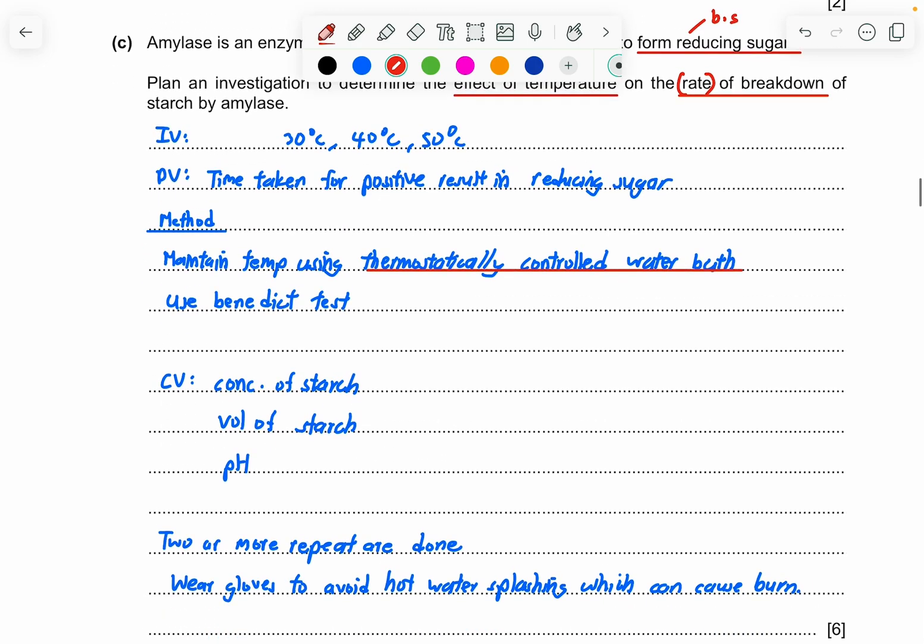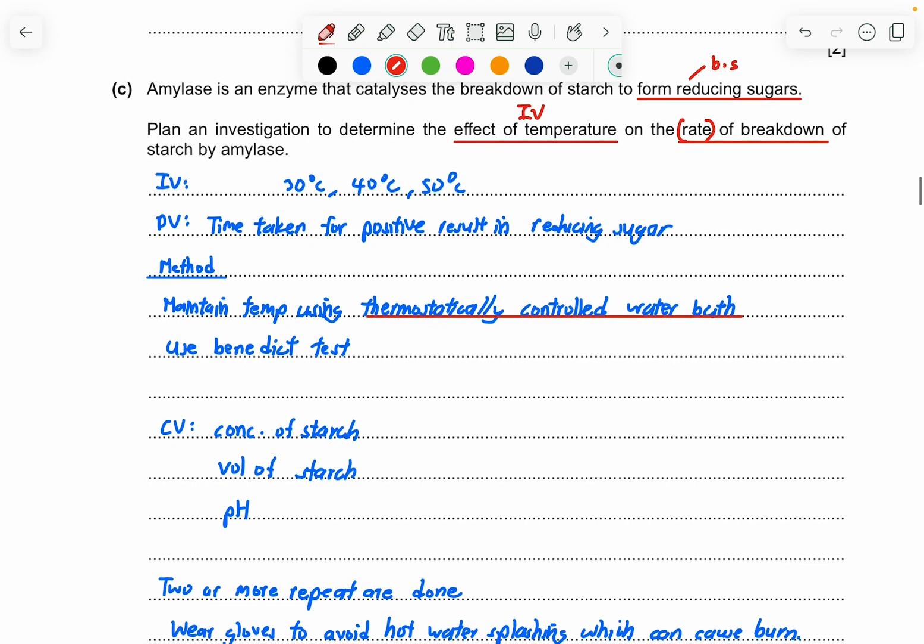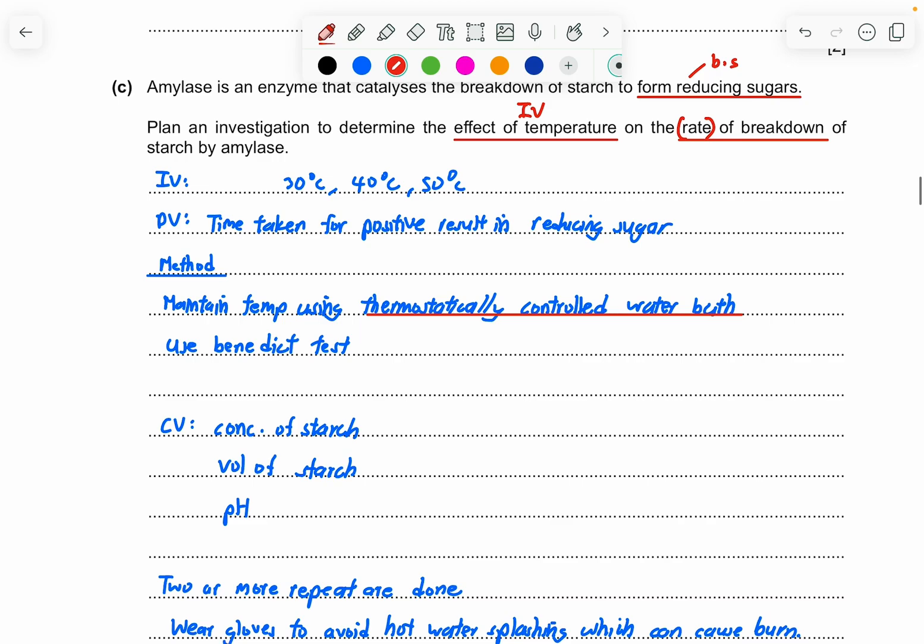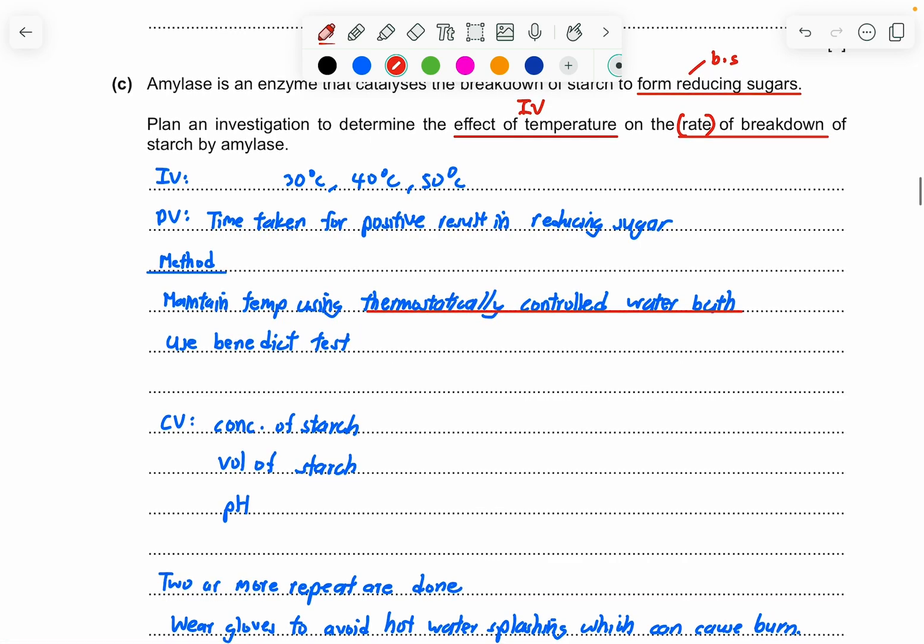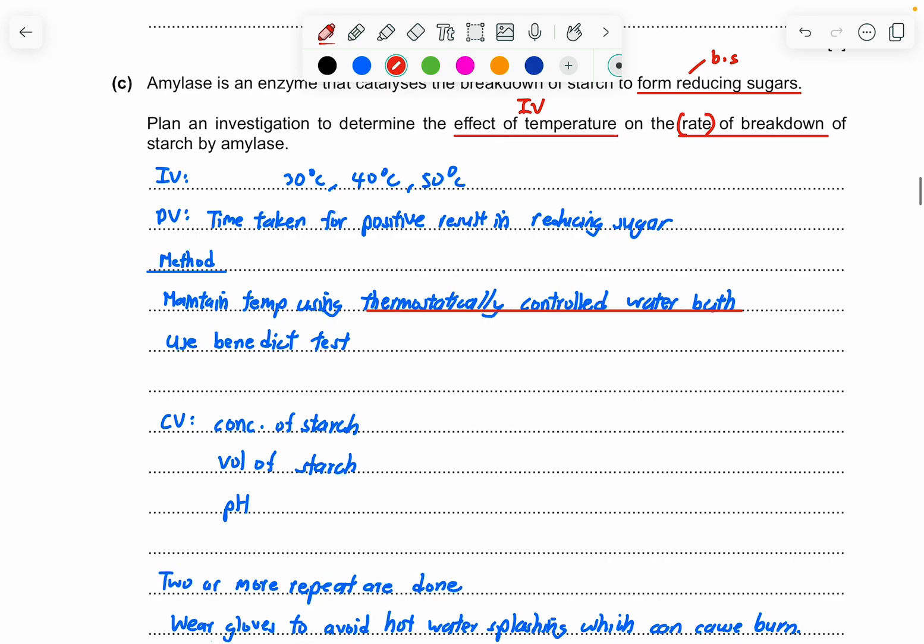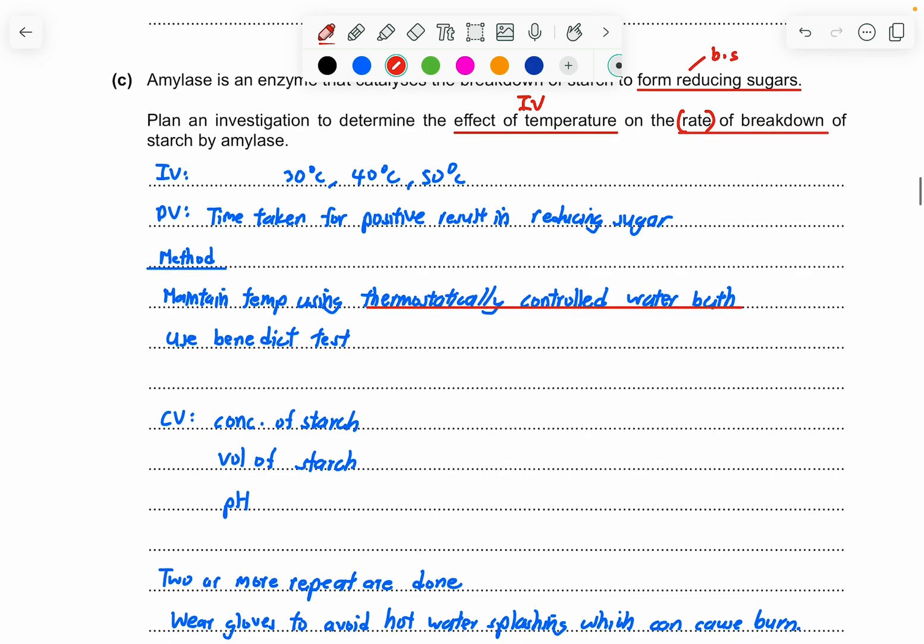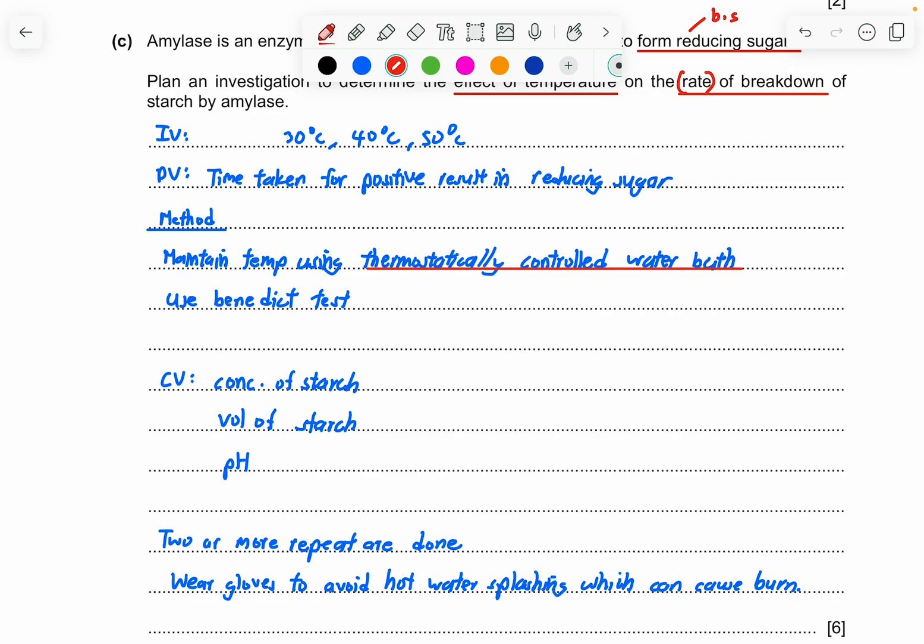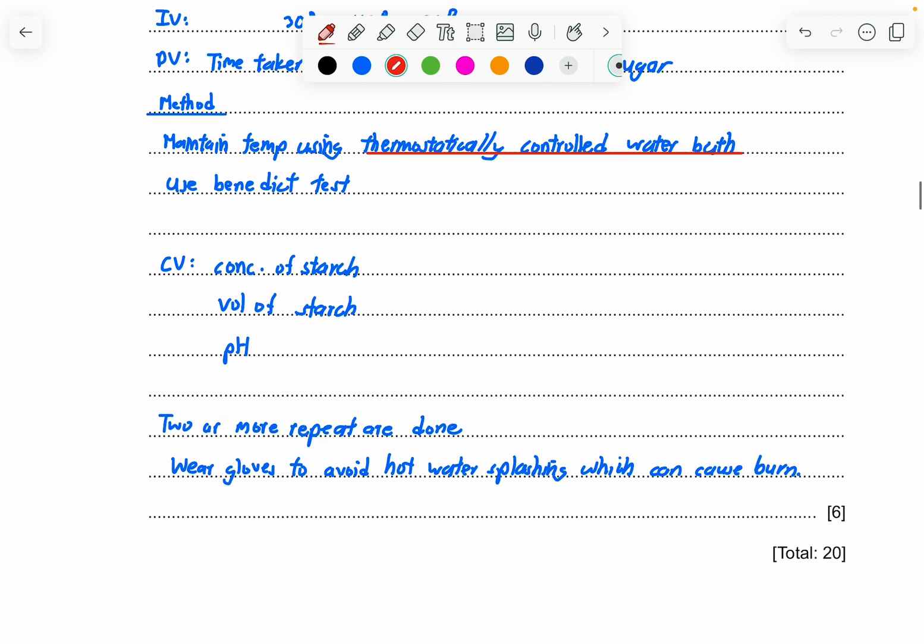The CV is the concentration of the starch because the amount of starch affects your rate of breakdown at the same time. So it has to be the same concentration of starch, same volume of starch being added, and then the pH. There's also many, many more answers that you can add. It's such like concentration of the amylase, the volume of the amylase, the sampling interval, or the concentration of the testing agent, which is the Benedict solution. So later on, we're going to mention the repeat. Two or more repeats are done. And then we can mention that we wear gloves to avoid hot water splashing, which can cause burns. So this is your answer.